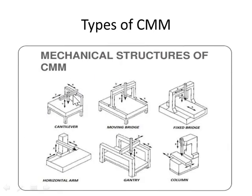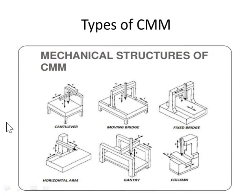This is the CMM machine in the cantilever type. Cantilever means one end is fixed and the other end is free. This column can move in all directions — X, Y, and Z — all three directions. That's why we call this the cantilever type. I am placing a work object here, and I need to measure the profile, like complicated shapes.